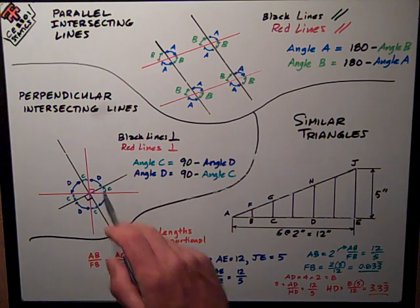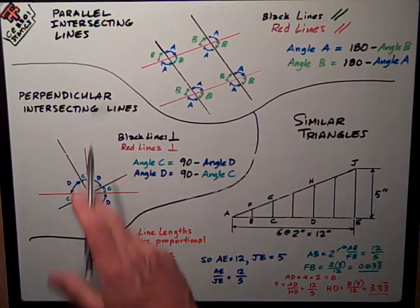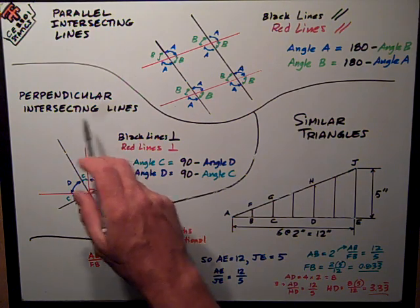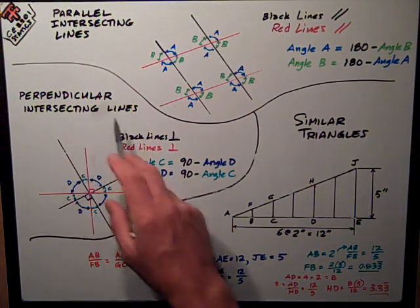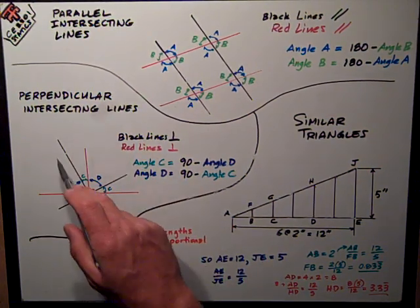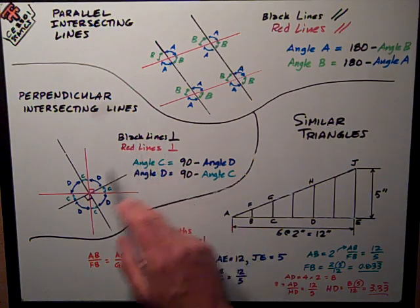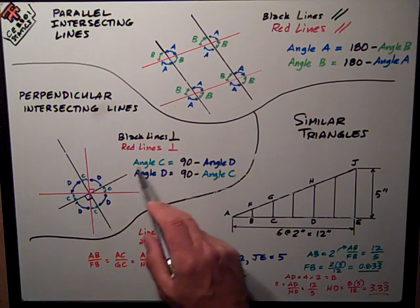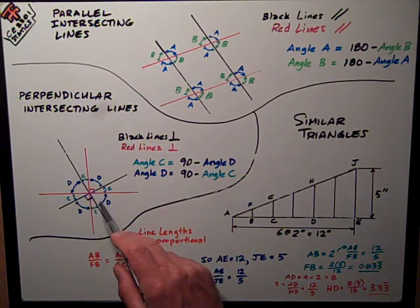Another concept we're going to use, and we just assume you know this because you do but you're just rusty on it, is perpendicular intersecting lines. On this diagram, I've shown the two black lines are perpendicular, at right angles to each other, and the two red lines are perpendicular to each other.